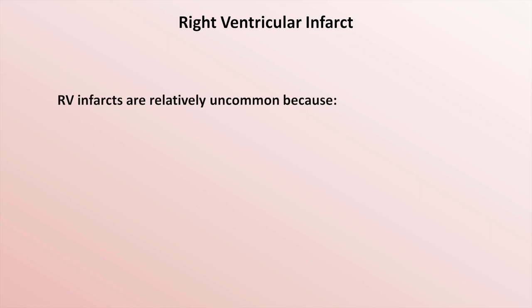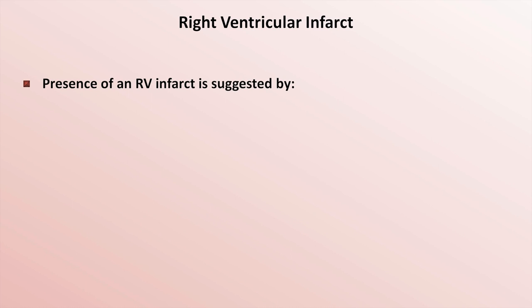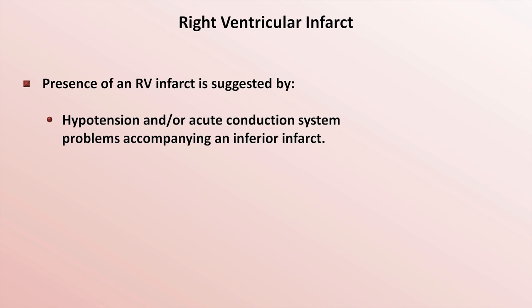Next to discuss is the diagnosis of a right ventricular infarct. RV infarcts are relatively uncommon because they require a proximal RCA occlusion. Also, the RV is less susceptible to ischemia and infarction due to a reduced workload and a thinner chamber wall as compared to the left ventricle. The thin chamber wall allows intracavitary blood to serve as a secondary source of oxygen. When an RV infarct does occur, it is suggested by hypotension and/or acute conduction system problems accompanying an inferior infarct. The hypotension is suggestive because an isolated infarct of the inferior wall of the LV should not typically be hemodynamically significant enough to cause hypotension on its own.